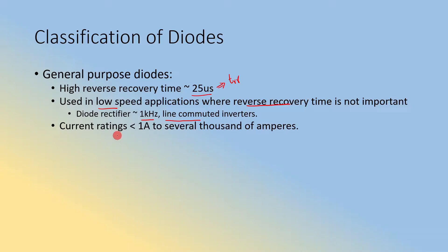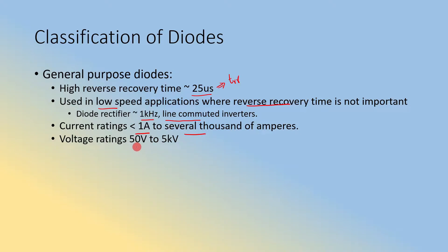In terms of current ratings, general purpose diodes have a wide range — available from less than 1 ampere to several thousands of amperes, though these applications are limited to low speed use. Voltage ratings also span a huge range: 50 volts to 5 kV. The manufacturing process is usually diffusion, though we won't discuss manufacturing techniques as they are out of scope for this course.